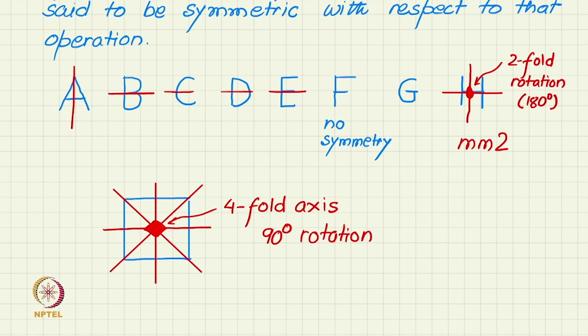And this kind of symmetry also is given a name, which I just give you here. This is called 4mm symmetry. 4 for the 4-fold in the center and mm represents these mirror planes.